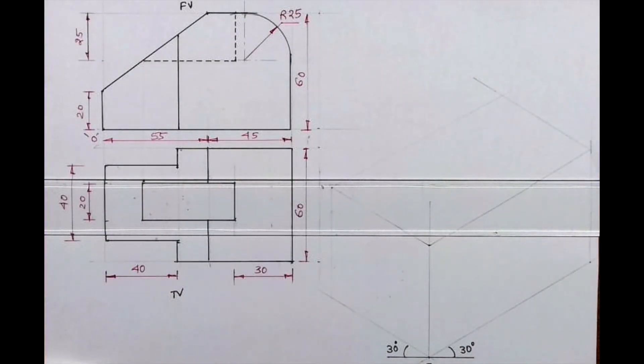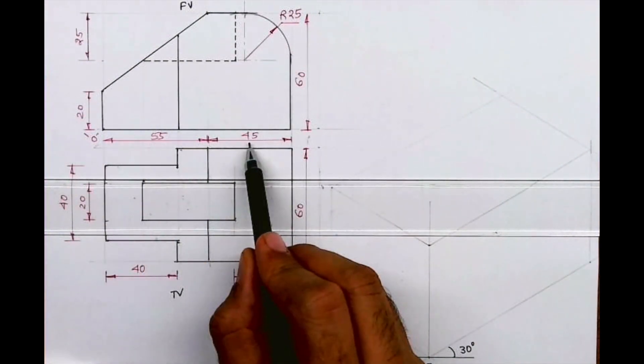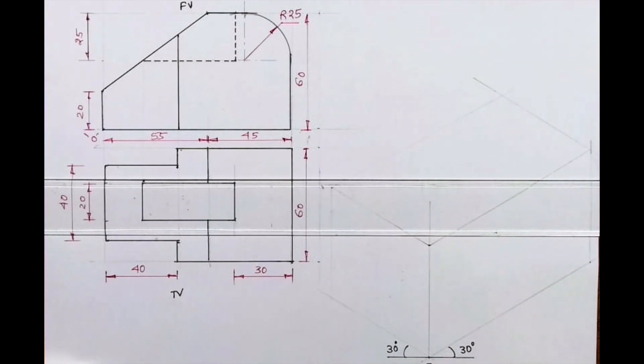Welcome to technical drawing. Today we'll see this problem in isometric. The front view and top view are given. Length is 55 plus 45, height is 60, and width is 60. So first we will draw the outline.